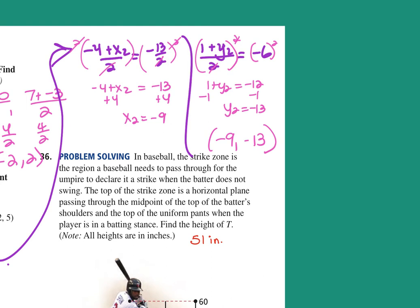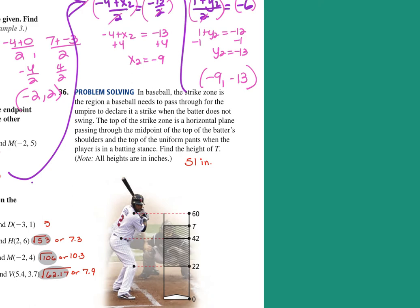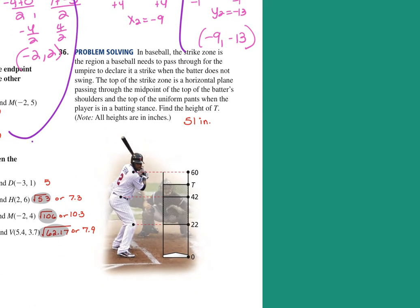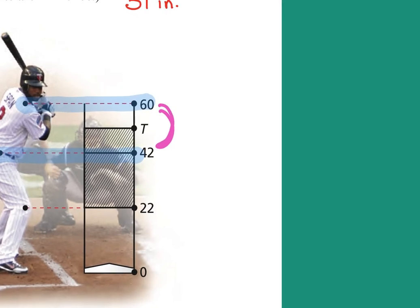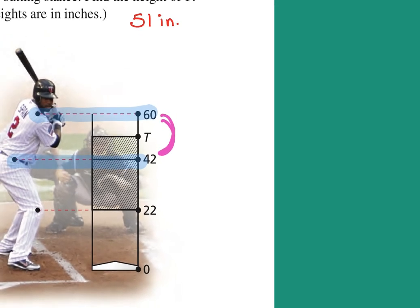36 said, in baseball, the strike zone is the region a baseball needs to pass through for the umpire to declare it a strike when the batter does not swing. The top of the strike zone is a horizontal plane passing through the midpoint of the top of the batter's shoulders and the top of the uniform pants when the player's in the batting stance. Find the height of T. So it literally says it's the midpoint between these, right? This line is from the shoulders, and this line is from the uniform pants. You're just looking for the halfway point between those two. So you can either add them, divide by 2, or figure out the increment. So I could just do 60 plus 42 divided by 2, 102 divided by 2, which is 51.